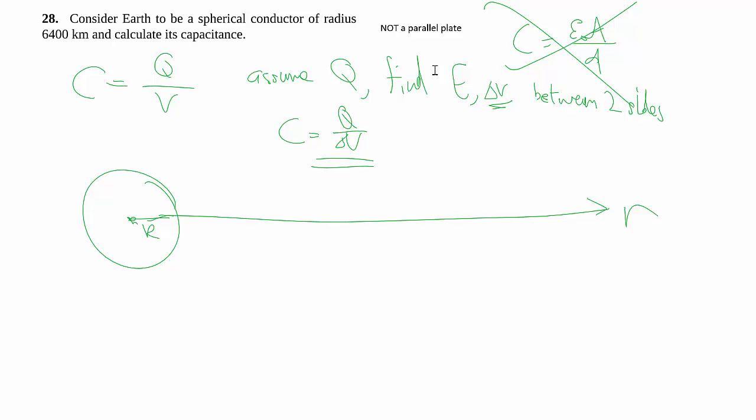So in order for us to talk about two sides, we have to basically assume what they mean is let's take the other side of the capacitor somewhere way in infinity. So that we can find out the voltage.